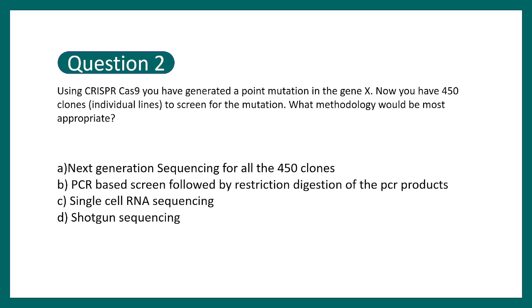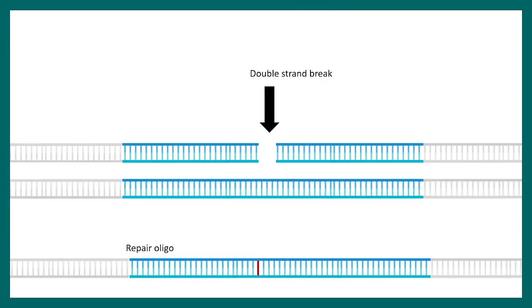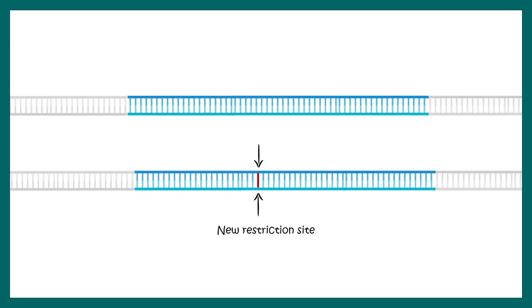Here the correct option would be option B and let me tell you how. So this is your CRISPR. Your guide RNA has guided the enzyme into a particular gene of interest that you want to manipulate and now you have a repair oligo which would be replacing a portion of the double-stranded break and thereby a mutation is incorporated either in one site or in the other site.